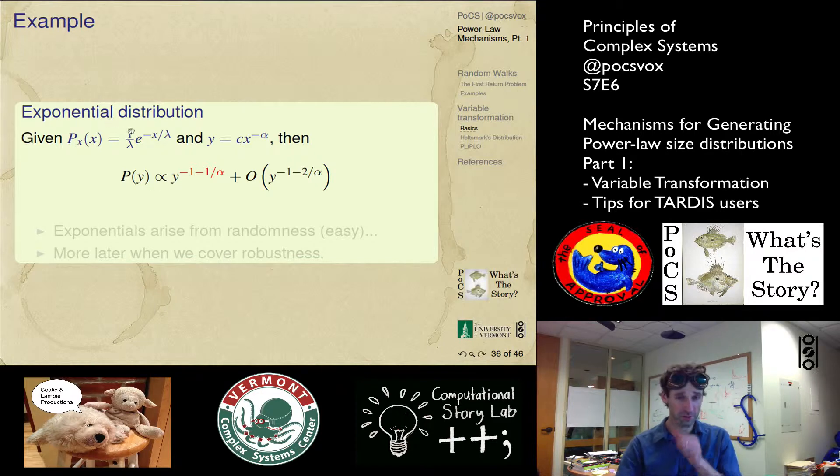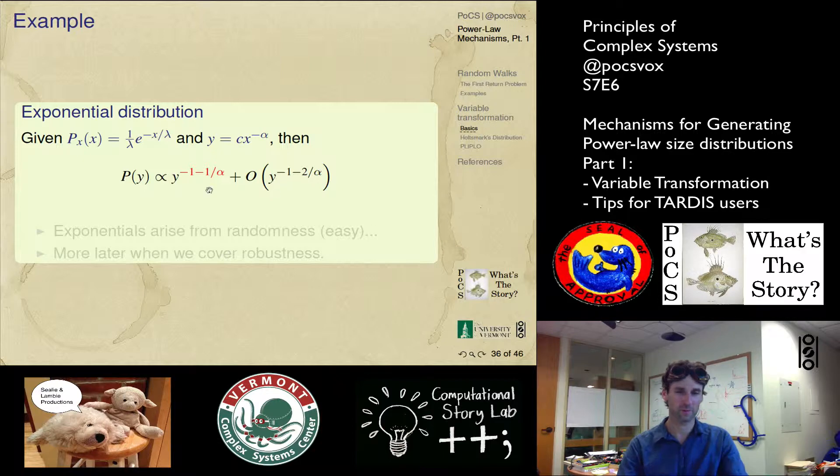So the exponential distribution approaches a constant. It doesn't behave polynomially. And again, we have that same transformation. We know straight away that it's going to be minus one, minus one over alpha. There's some correction terms we could put in there, but basically it's going to be proportional to this. Super duper.